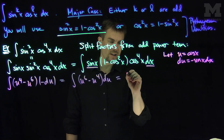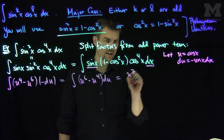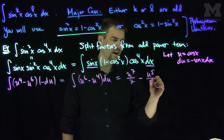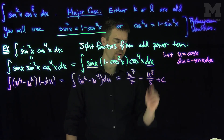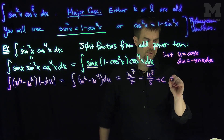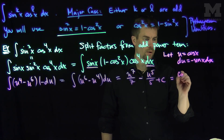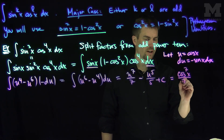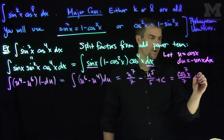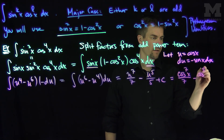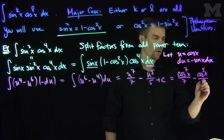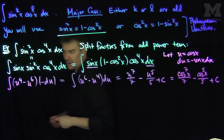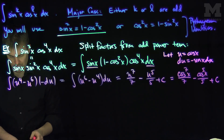So that gives us the integral of u to the sixth minus u to the fourth du, which equals u to the seventh over seven minus u to the fifth over five plus C. Since u is cosine, this is exactly cosine to the seventh of x over seven minus cosine to the fifth of x over five plus C — and there's your antiderivative.